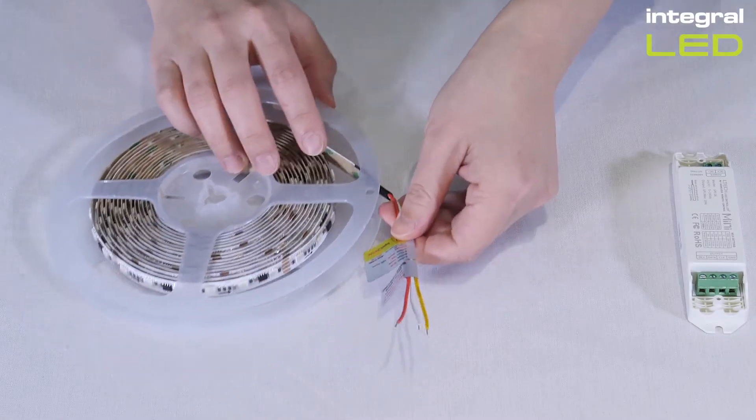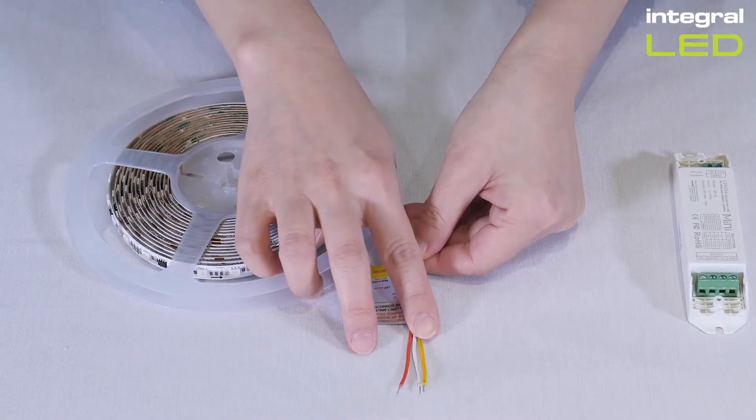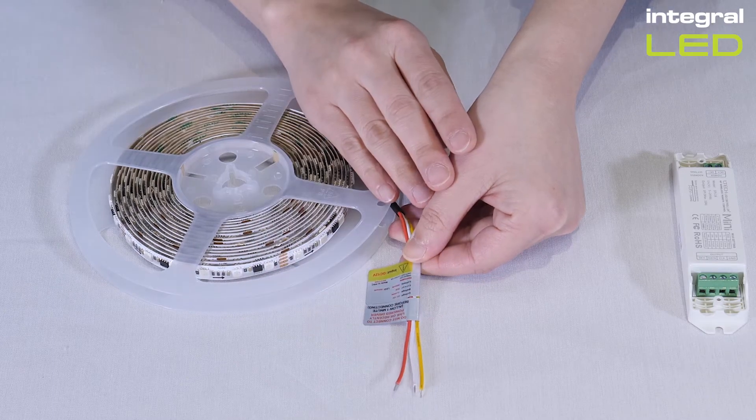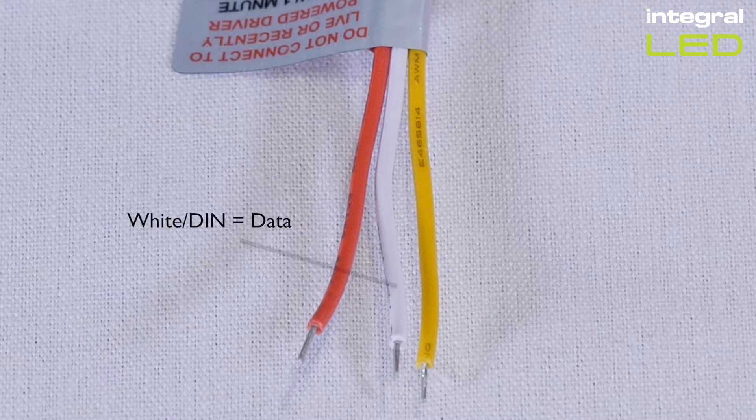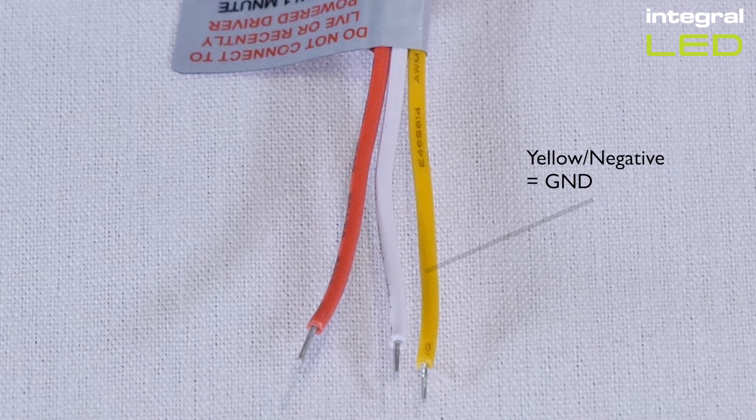The colors of the three wires on the strip each correspond with one of these output connections. Red goes to DC plus, white goes to data, yellow goes to GND.